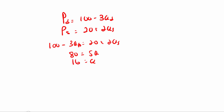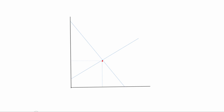If Q equals 16, I can plug it back in: 3 times 16 is 48, and 100 minus that is 52. So the equilibrium price is 52. To check, I put it into the supply curve: 2 times 16 is 32, plus 20 is also 52. So equilibrium price is 52 and equilibrium quantity is 16.